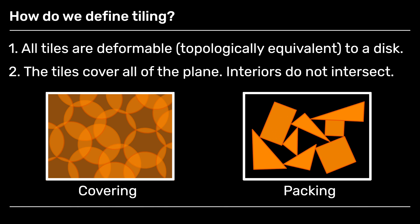The second property: I certainly want to make sure my tiles cover the entire plane, and that's called a covering. And then I also don't want any of my tiles to intersect in their interiors. So I want my tiles to be what's called a packing.